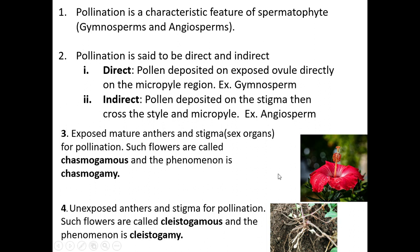Pollination is said to be direct and indirect. In direct pollination, the pollen is deposited on the exposed ovule directly on the micropyle region — gymnosperms have this characteristic. In indirect pollination, pollen is deposited on the stigma, then crosses the style and reaches the micropyle by germinating a pollen tube — this occurs in angiosperms. So pollen is deposited directly in gymnosperms and indirectly in angiosperms.